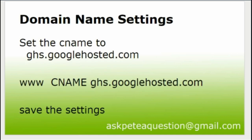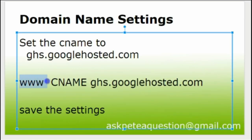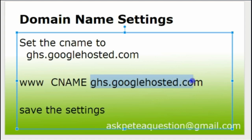I went to the tab where I bought my domain name from, came down to Advanced DNS Settings, and set the CNAME to ghs.googlehosted.com. Within my package I typed 'www', chose 'CNAME', then in the next box typed ghs.googlehosted.com and saved that record.